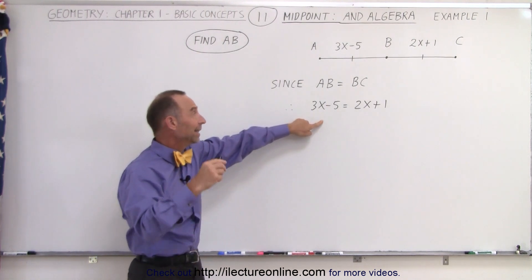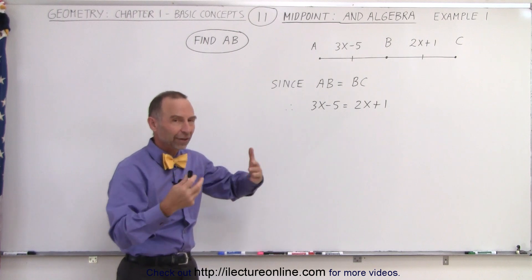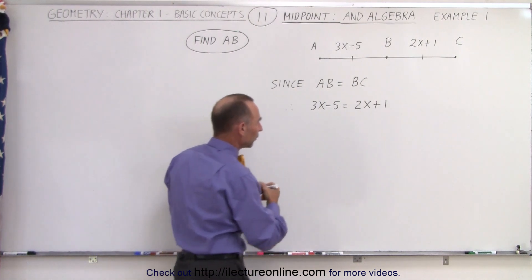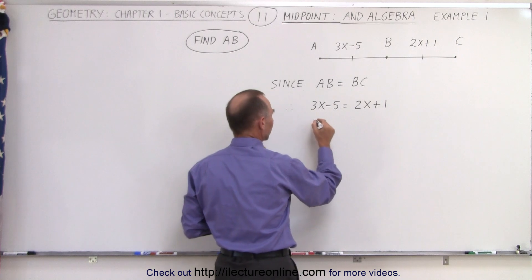First we're going to solve this for x. We move all the terms with x to one side: 3x minus 2x is equal to 1 plus 5.